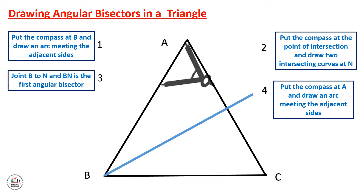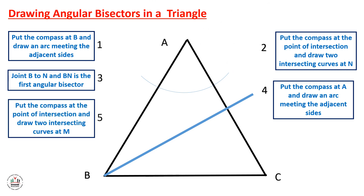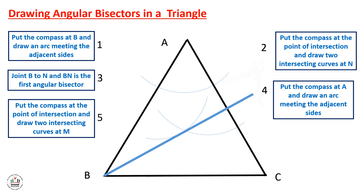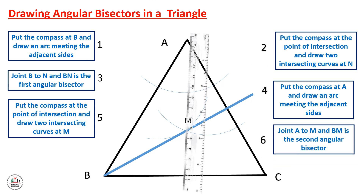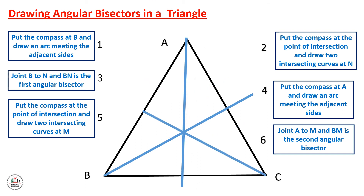Now place the compass at A and draw an arc meeting the two adjacent sides. Place the compass at the intersection points and draw two intersecting arcs at point M. Join A with point M. For the last angular bisector, join the intersection point of the previous two angular bisectors directly to point C.